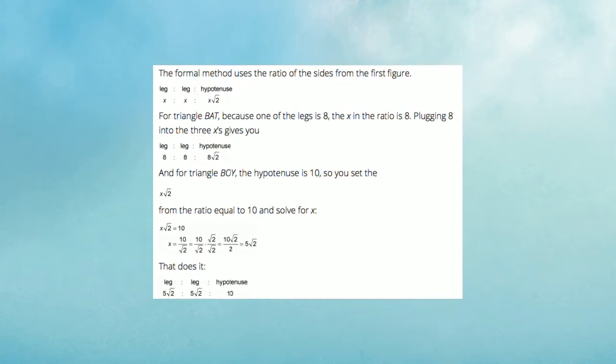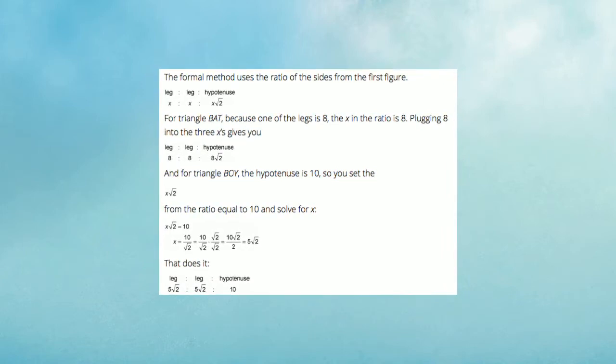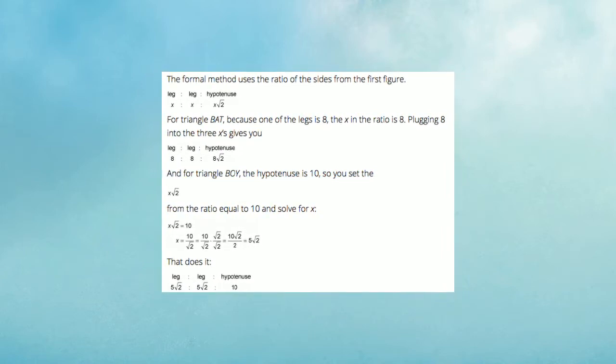With this now known information, we can use ratios to figure out the second triangle has a leg of 5 root 2 and a hypotenuse of 10 using the Pythagorean theorem.